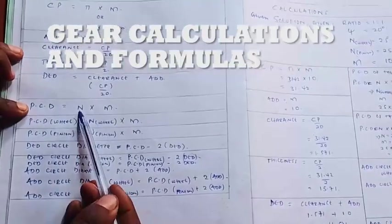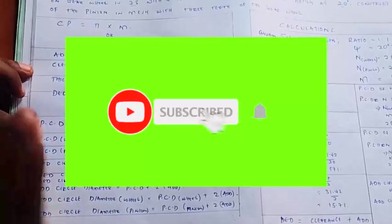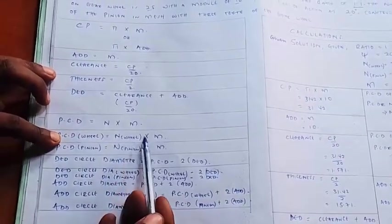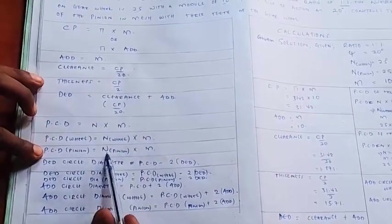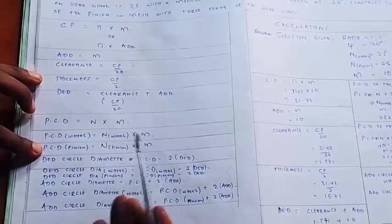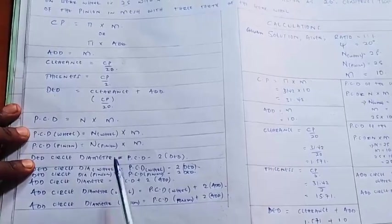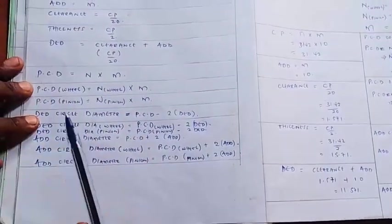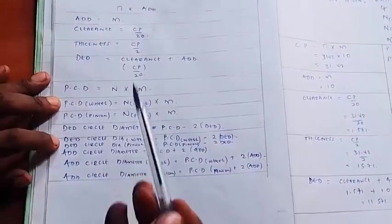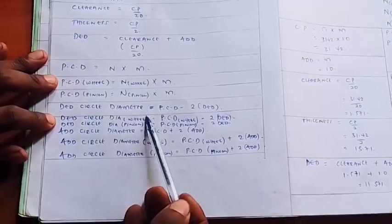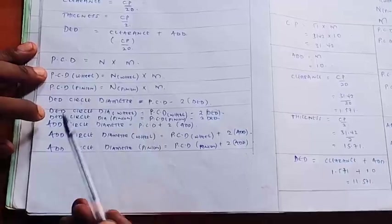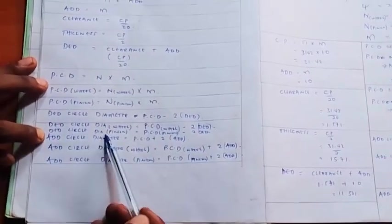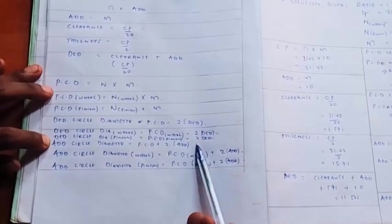The PCD in general is always equals to number of teeth times module. Since we have two gears — the pinion and the wheel — we look for the PCD of the wheel and the PCD of the pinion using the same formula: number of teeth times module for each. The dedendum circle diameter in general equals PCD minus 2 dedendum. For the wheel: PCD of the wheel minus 2 dedendum. For the pinion: PCD of the pinion minus 2 dedendum.